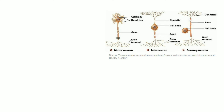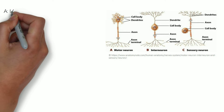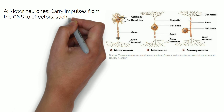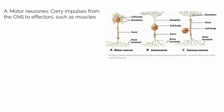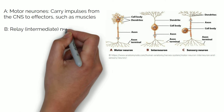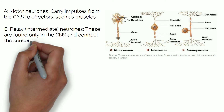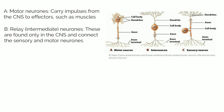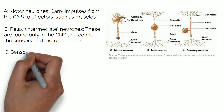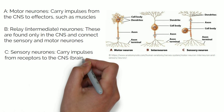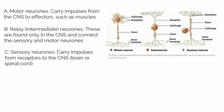There are three different types of neurons with the same components but different structures. A is a motor neuron — these carry impulses from the CNS to effectors such as the muscles. B is a relay or interneurone — these are found only in the CNS and connect the sensory and motor neurons. C is a sensory neuron — these carry impulses from receptors to the CNS, which is the brain or spinal cord.